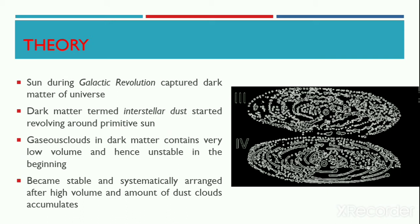In the beginning, the gaseous clouds in the dark matter contained very low volume and hence they were unstable in nature. However, the dust clouds in the dark matter started becoming more stable and systematically arranged when more volume of these dark matters accumulated.